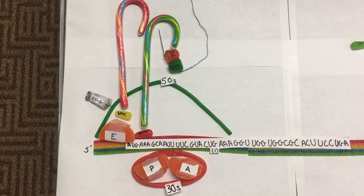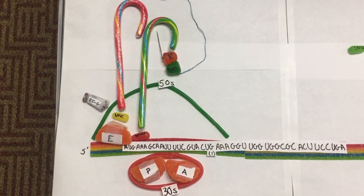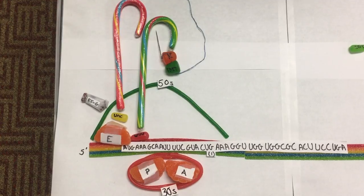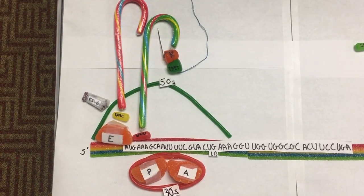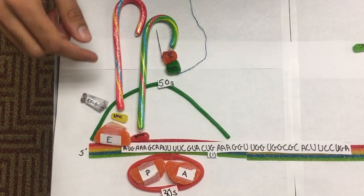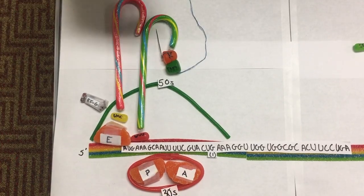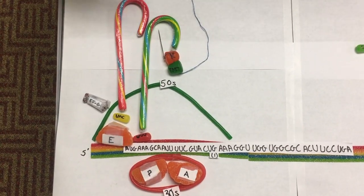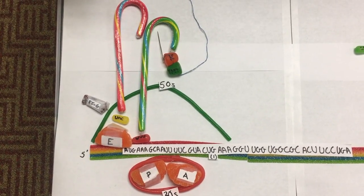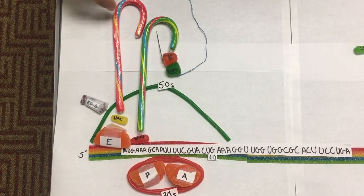The third step in elongation is translocation of the deacylated tRNA to the E site. This requires EFG and GTP hydrolysis. As you can see, the dipeptidyl tRNA has moved from the A site to the P site and the deacylated tRNA from the P site has moved to the E site.